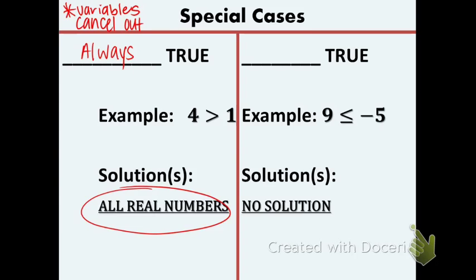And another special case is when you get an answer that is never, ever true. An example of this would be 9 is less than or equal to negative 5. 9 is obviously bigger than negative 5, not less than. If that happens, you're going to get no solution. That means no matter what number it is, it will not work when you substitute it in for the variable. So those are the two special cases. And now we will see what those look like when we are doing examples.